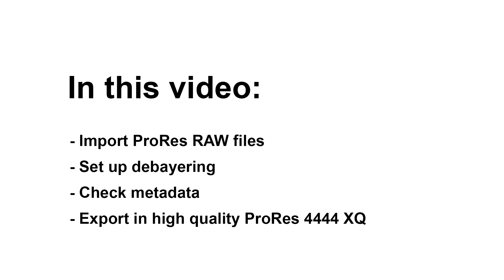What we'll do is load our ProRes RAW files in, check the debayering to confirm it goes to the correct color space and gamma, check the metadata, and then render them out as high-quality ProRes 4444 XQ clips. We'll keep the original ProRes RAW files for our archive.